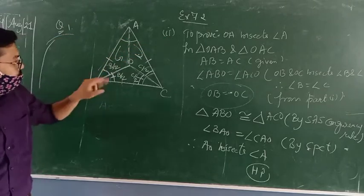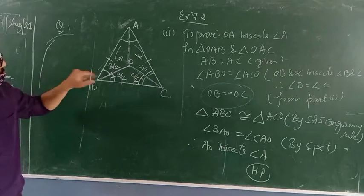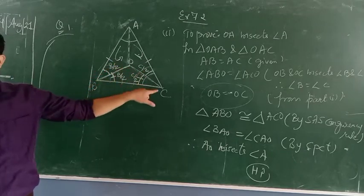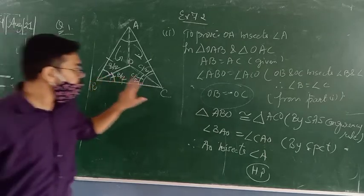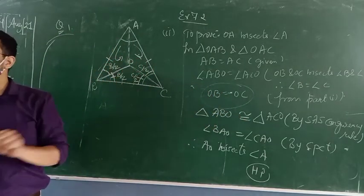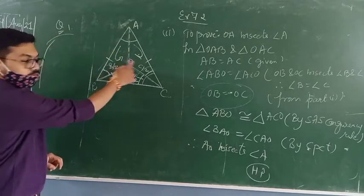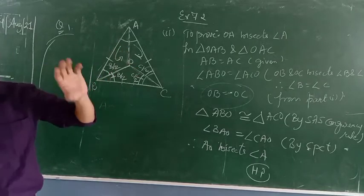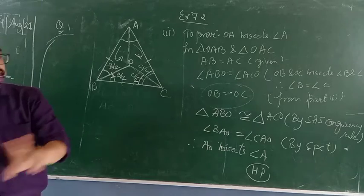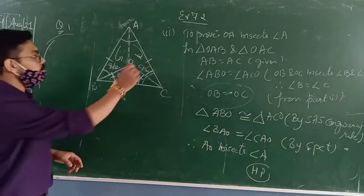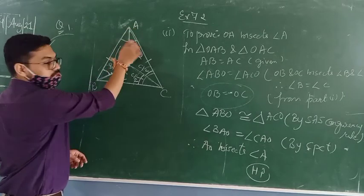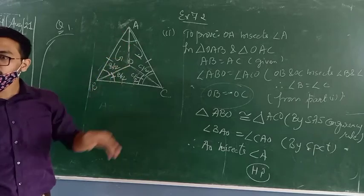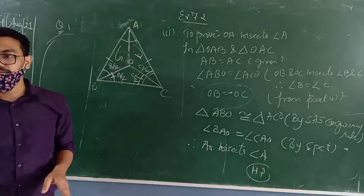These sides are equal — this is given in the question. OB equals OC — this thing you calculated in the last part. Angle ABO equals angle ACO because OB and OC bisect angle B and angle C, and angle B equals angle C because angles opposite to equal sides are also equal. So by side angle side, these two triangles are congruent, and by CPCT these two angles are equal, so AO bisects angle A.